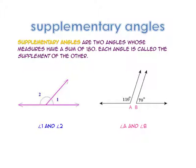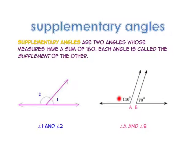Supplementary angles are two angles whose measures have a sum of 180 degrees. Each angle is called the supplement of the other. Angle 1 and angle 2 are supplementary, and angle A and angle B are supplementary: 110 plus 70 equals 180 degrees. Note they do not have to touch or be adjacent in order to be supplementary.